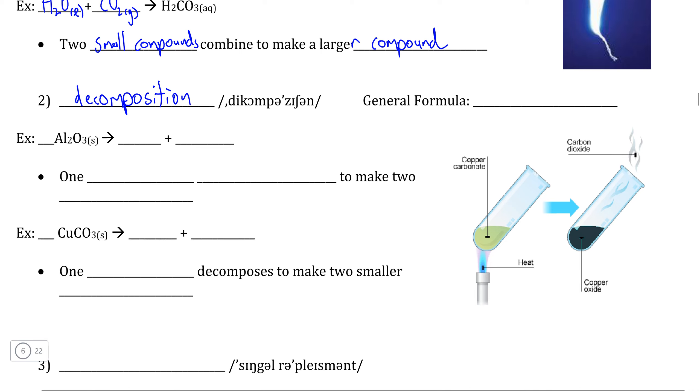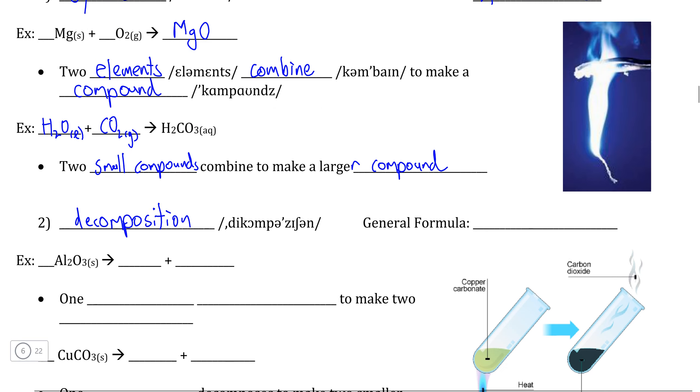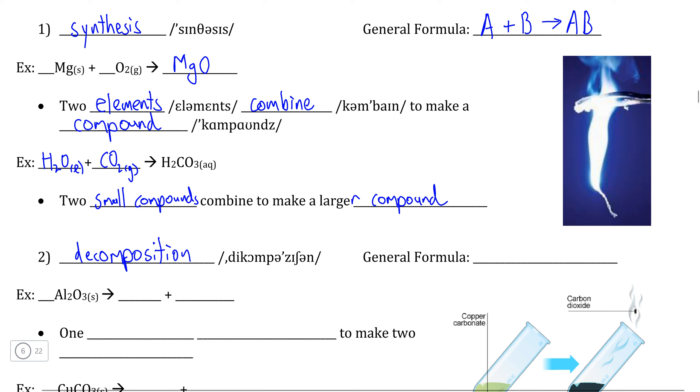So decomposition is where we get the English word to decompose from, which means to break down into smaller pieces. And decomposition reactions are the literal reverse of a synthesis reaction. So instead of starting with our two elements, we're actually going to start with our compound. In the general formula, we can simply represent this as AB.